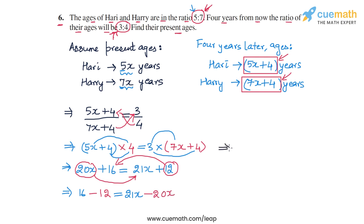And finally we can see that on the RHS we get 21x minus 20x, that's x. Let me write it on the LHS. And then we have 16 minus 12 on the other side which is equal to 4. So we get the value of x as 4.